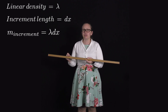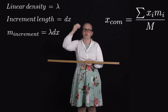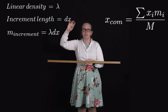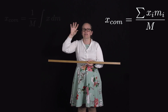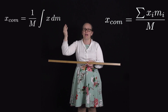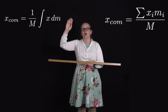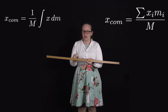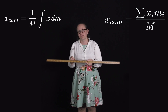What we want to do is use the same equation — that the centre of mass equals the sum of x_i m_i over the total mass — but in integral form. So this becomes: x for the centre of mass equals 1 over M, where M is the total mass, times the integral of x dm, which tells us to add the position times the mass of each of these little components.